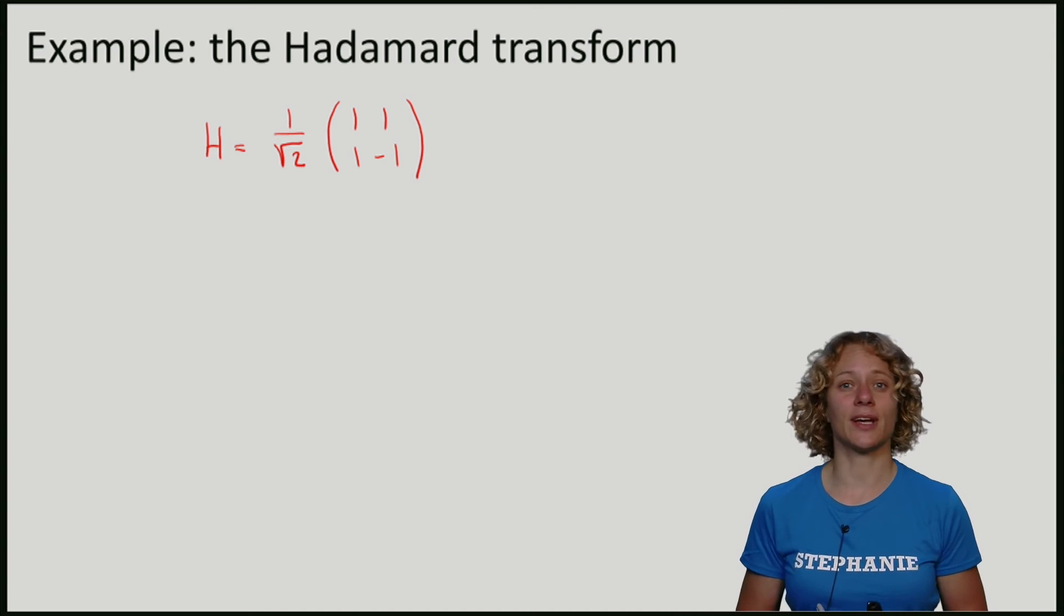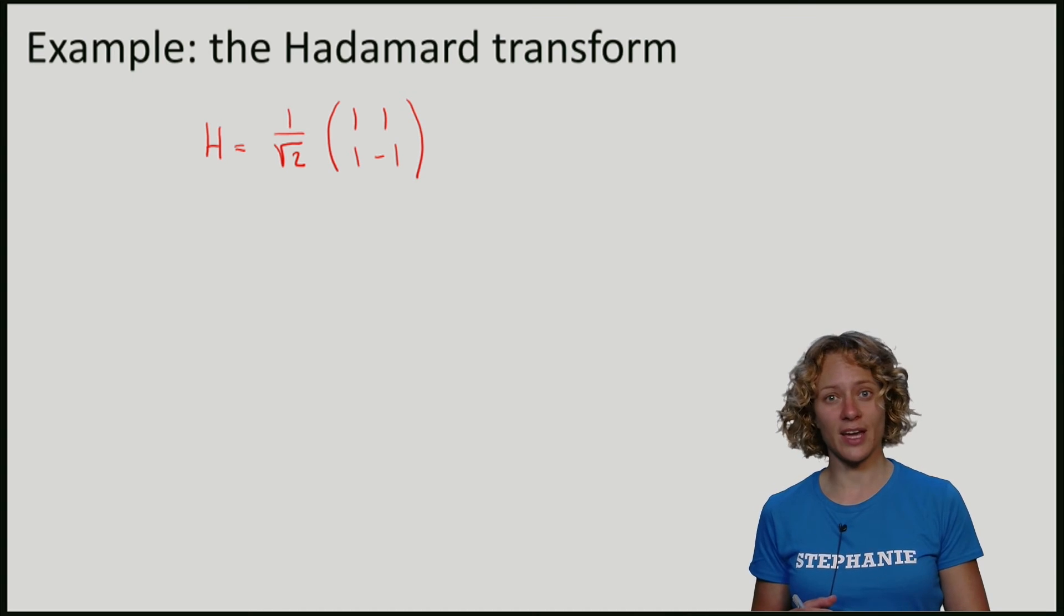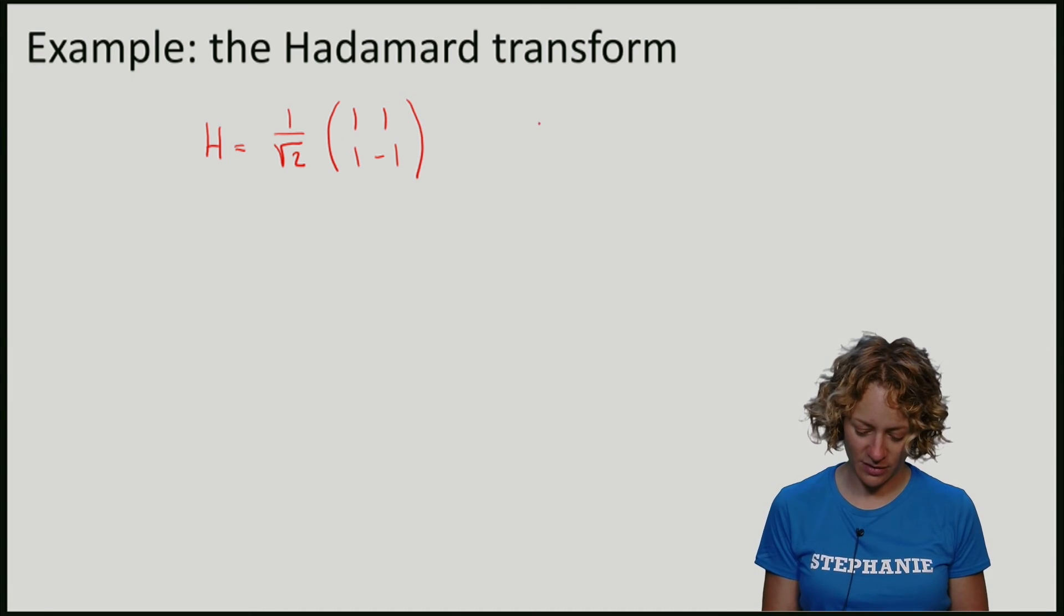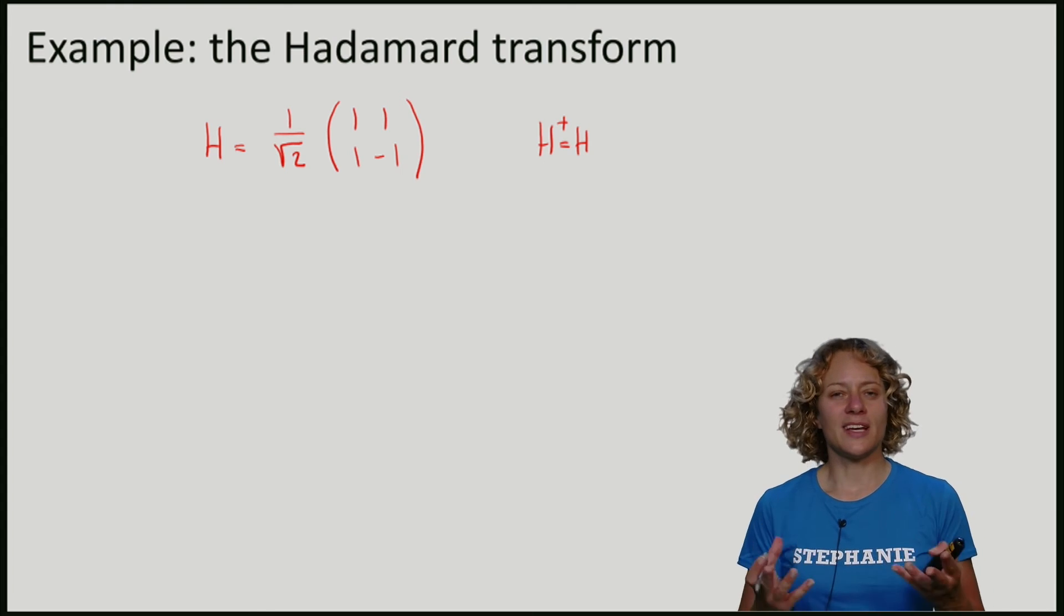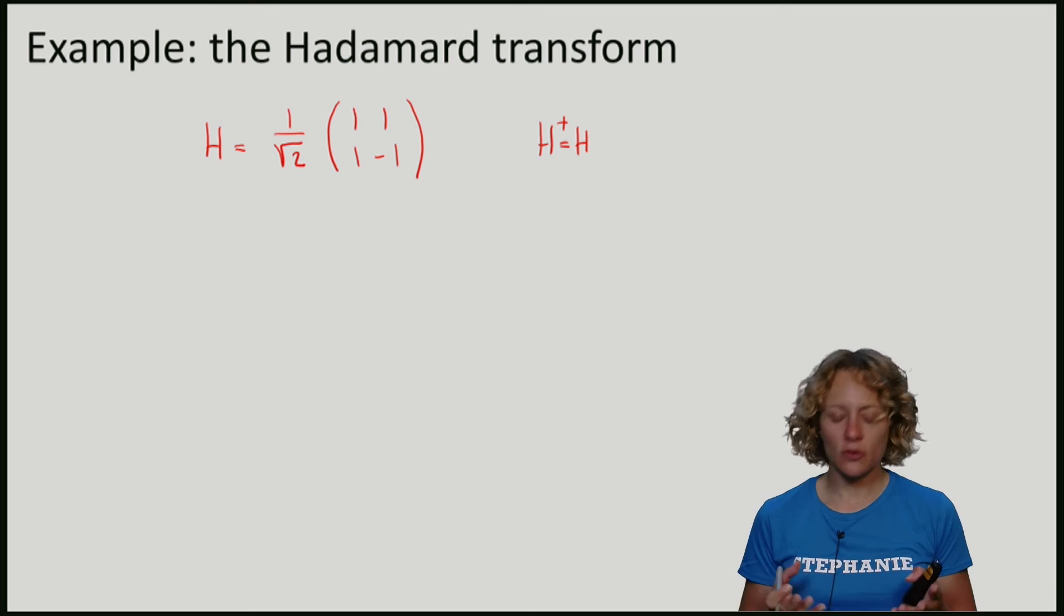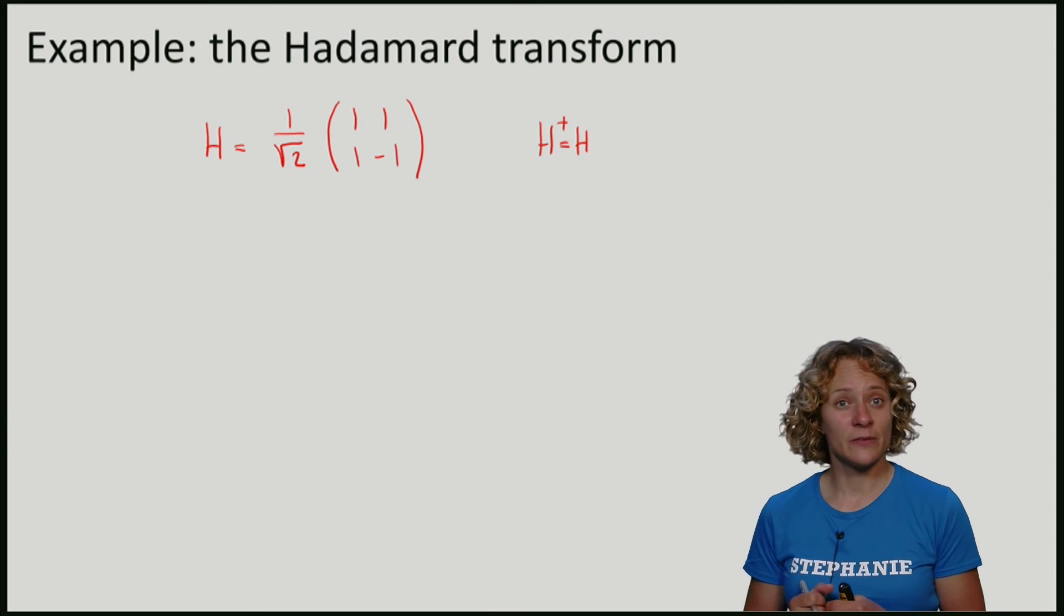Note that here in fact the conjugate transpose of H is just H itself. So we say that such a matrix where its conjugate transpose is equal to itself is Hermitian.